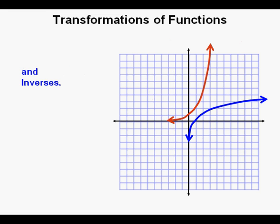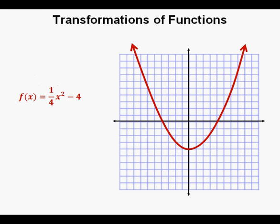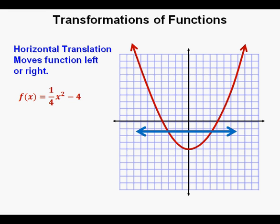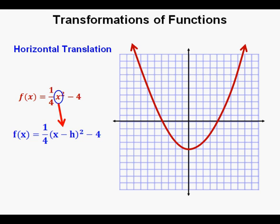We'll also look at inverse function transformations. We're going to start with this function: f of x equals 1 fourth x squared minus 4. We will first look at a horizontal translation of the function. A horizontal translation moves a function or the graph of a function left or right on a coordinate plane. We do a horizontal translation by taking the variable x and expanding it to be x minus h.